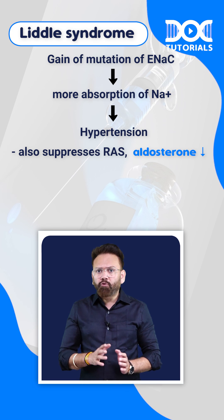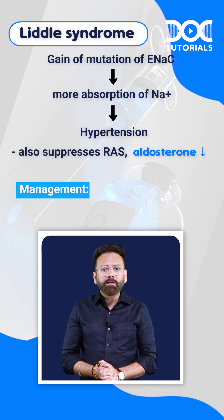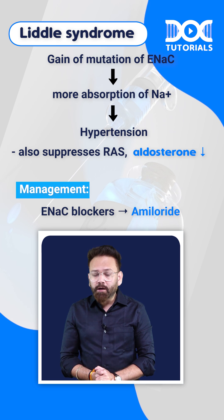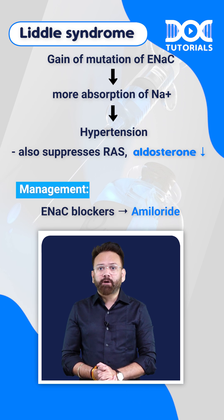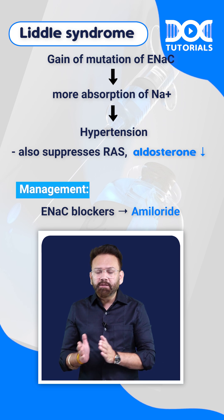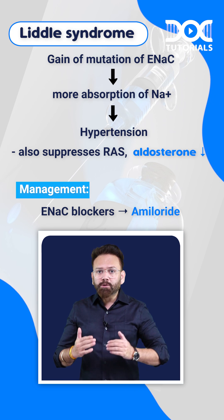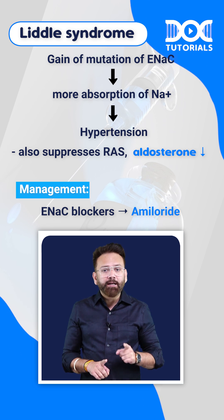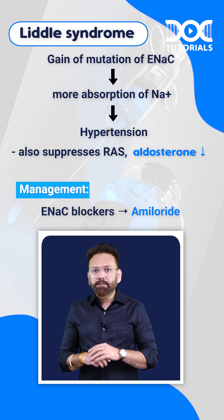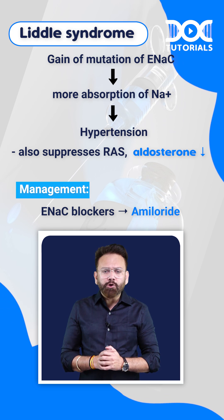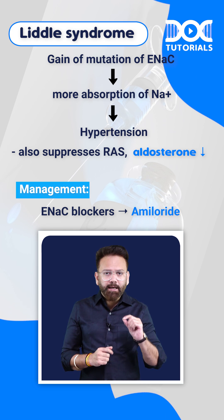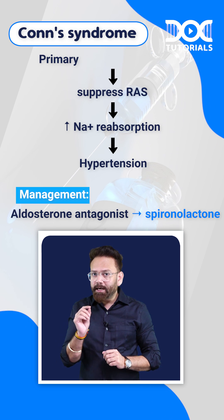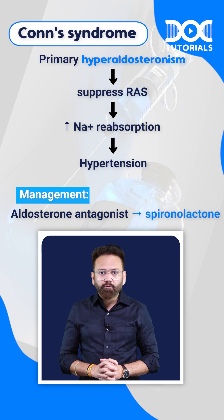The management of Liddle syndrome is an ENaC blocker like amiloride. To differentiate between the two — both present with hypertension — the key difference is that in Liddle syndrome aldosterone will be low, whereas in Conn syndrome aldosterone will be high.